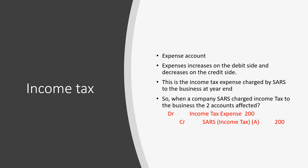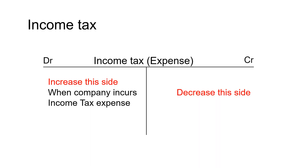The income tax account is an expense account. Expenses increase on the debit side and decrease on the credit side. This amount is usually determined at the end of the financial year, where the company calculates the tax payable on the company's profits — usually 28% of the company's profit in South Africa. The two accounts affected when SARS charges income tax are the income tax account and the SARS income tax account. Income tax is debited as expenses are increasing, and SARS income tax as a liability is credited. This account decreases on the credit side when we close it off to the appropriation account.